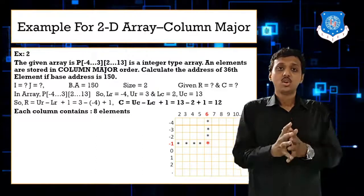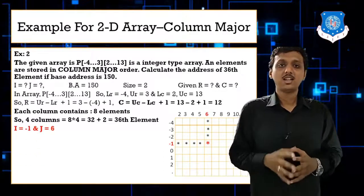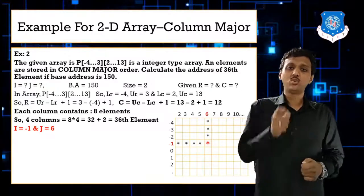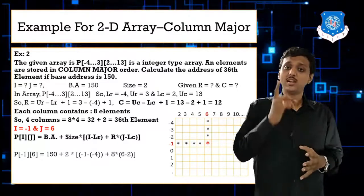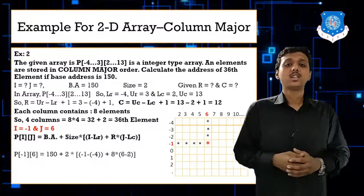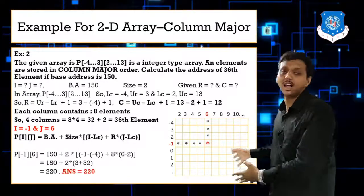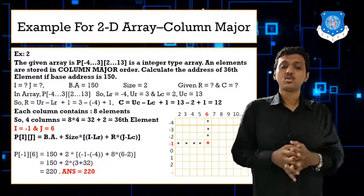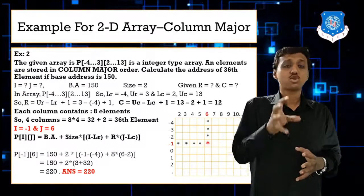So i = -1 and j = 6. Applying the column major formula with all the values, the answer becomes 220. This is the address of the 36th element stored in column major order.